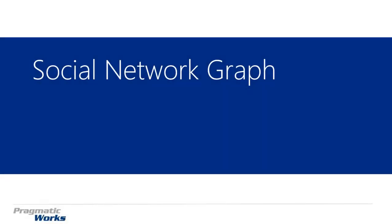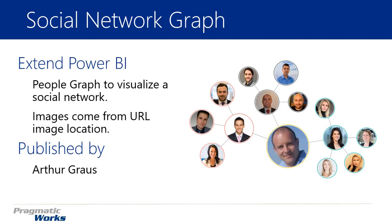Hi and welcome back to the Power BI Custom Visuals course. In this module we're going to be looking at the Social Network Graph. This visual is quite nice for being able to show basically a people graph — a graph of different people that you're associated with or want to display some kind of association or relationship with. It allows you to look at something like your LinkedIn network or Facebook network and see how people have relationships to each other.